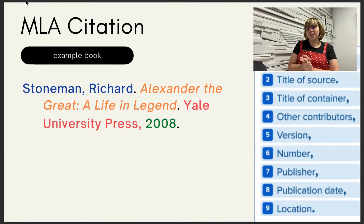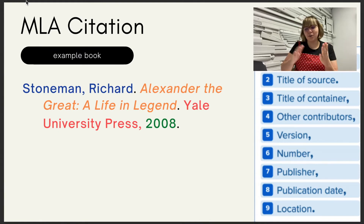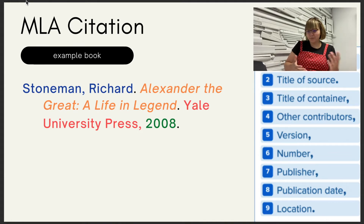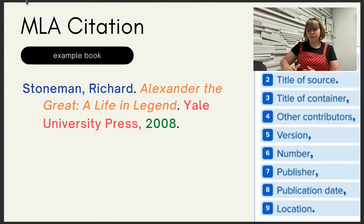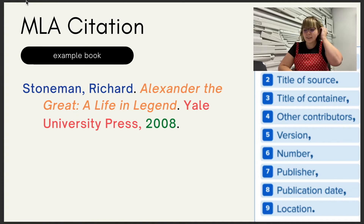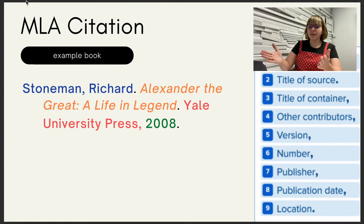So this is a book — a book is probably the easiest thing to cite in MLA. You have the author's name: Stoneman, Richard — notice we use the full first name. Then we have the title of the book: Alexander the Great: A Life in Legend — every word is capitalized except 'the' and 'in.' Then we have the publisher. Because it is a book without an edition number, we skip other contributors, version, and number, and go straight to the publisher, then a comma, publication date, and period. For a physical book you don't need a URL.